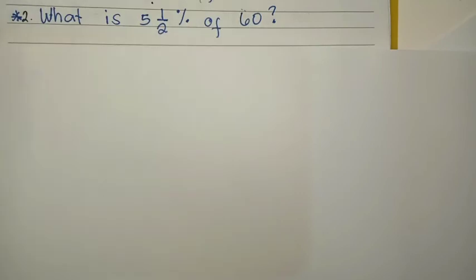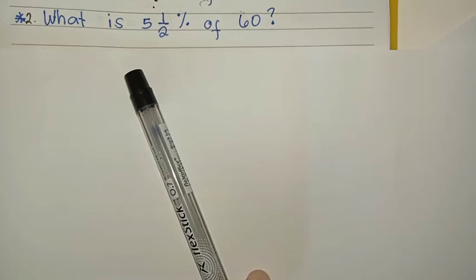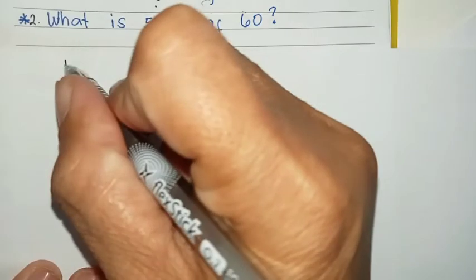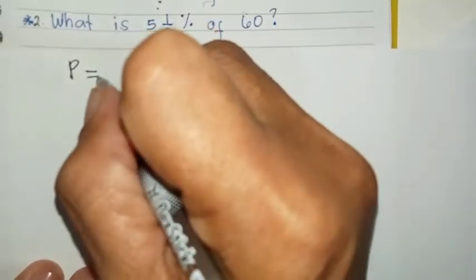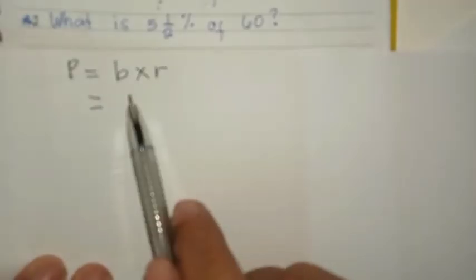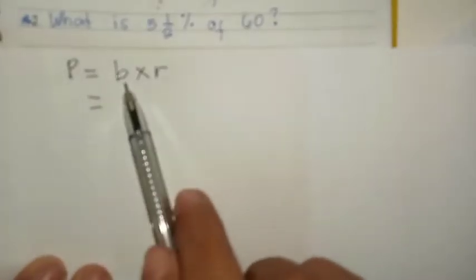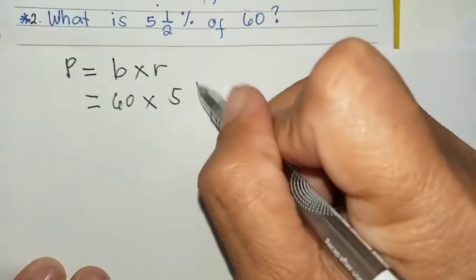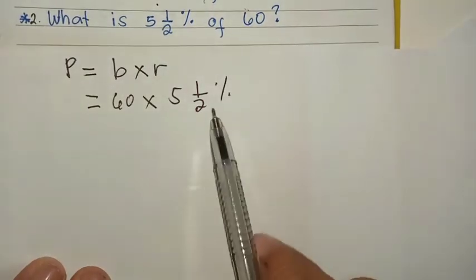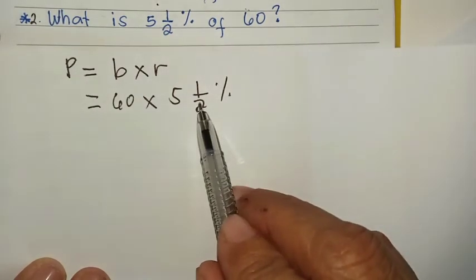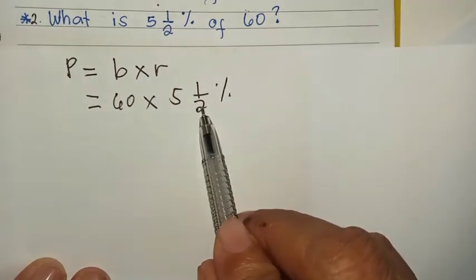I hope you understand the first problem. Now, let's go to the second example. What is five and a half percent of sixty? Using the formula of the part, which is P equals base times the rate. We identify where the base and rate are. The base is 60 times the rate, five and one half percent. Now, there's one half. This one half, we need to change to its equivalent decimal.